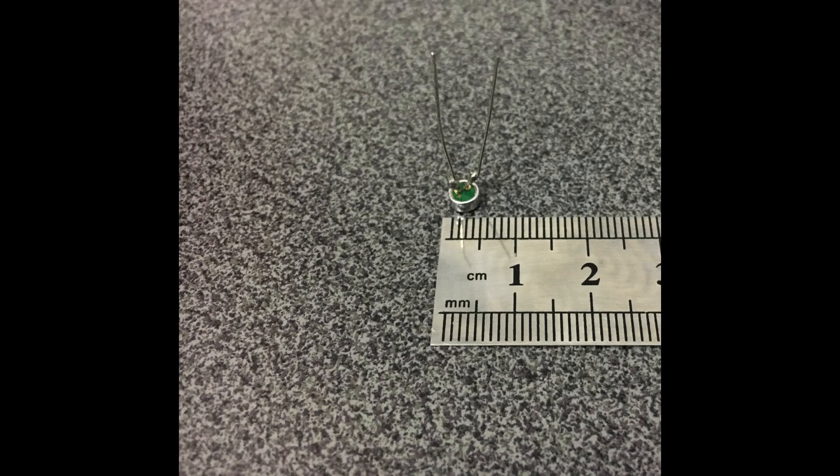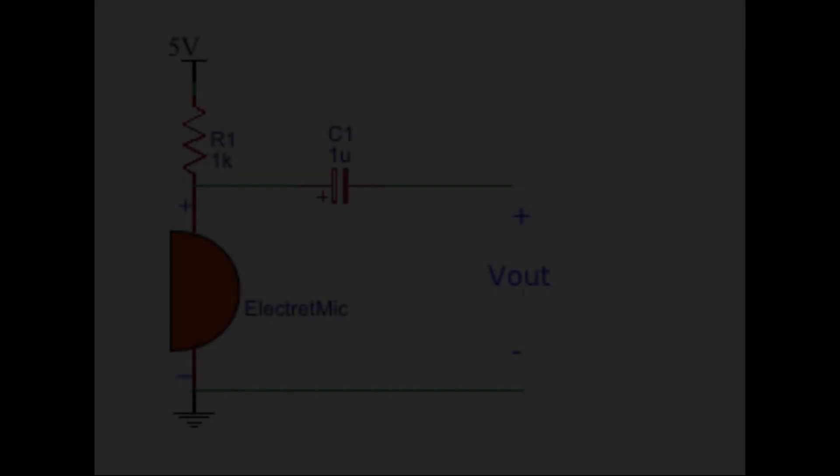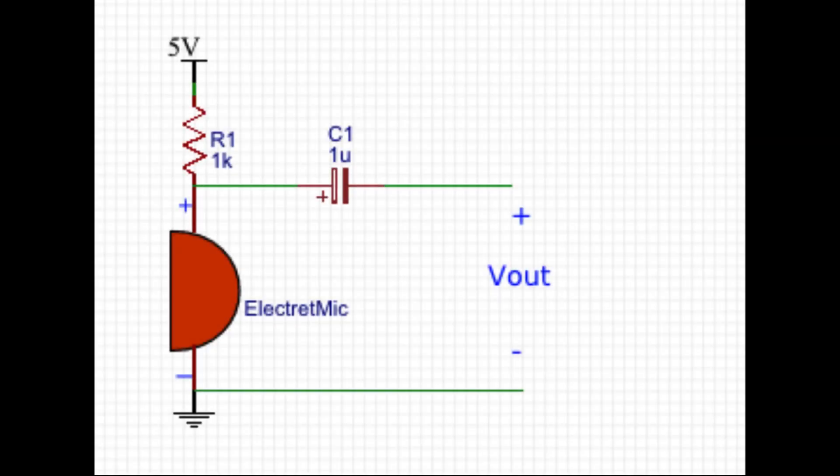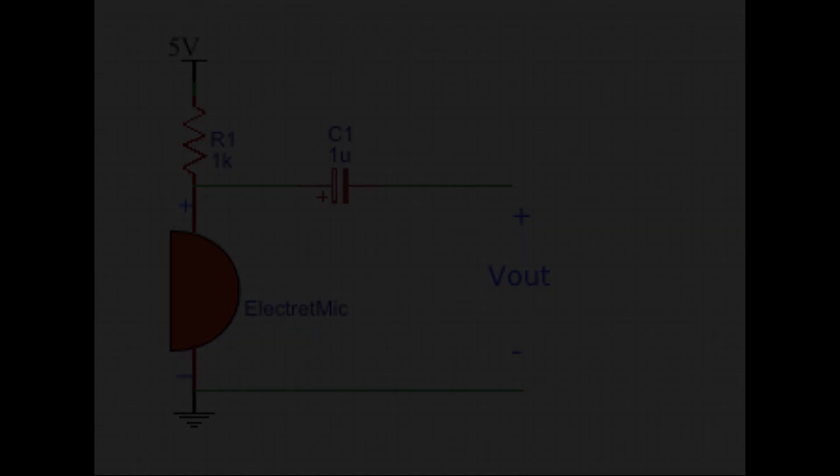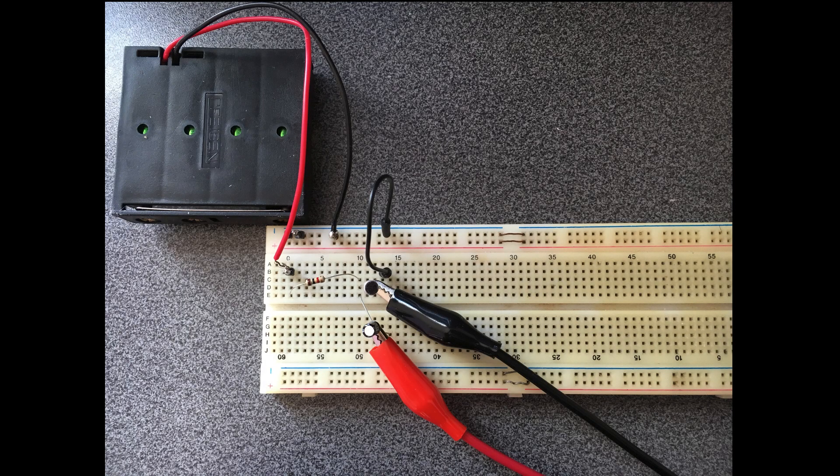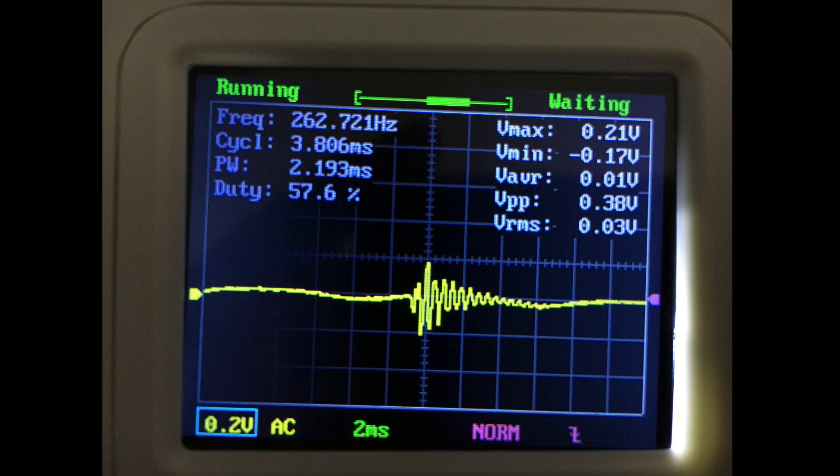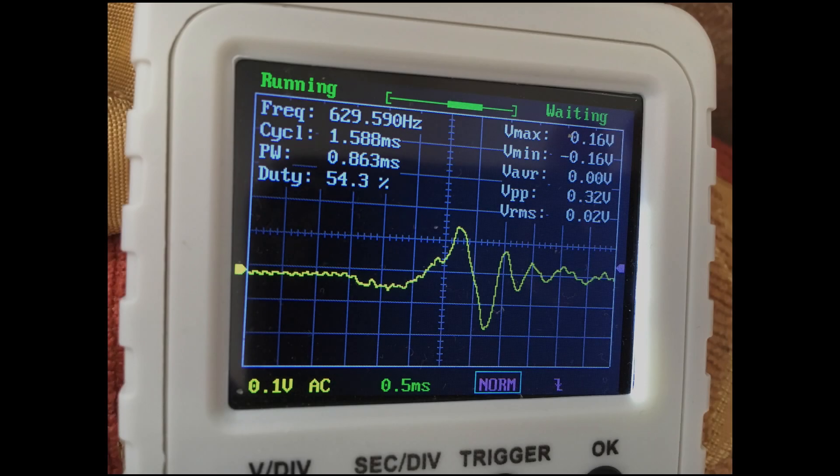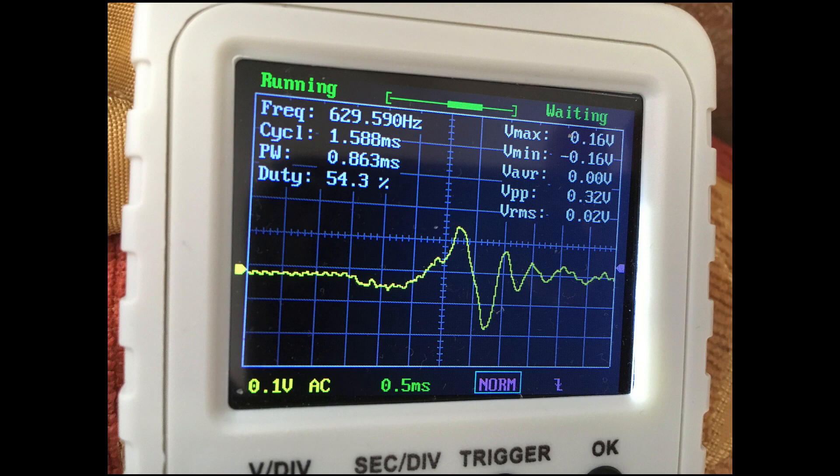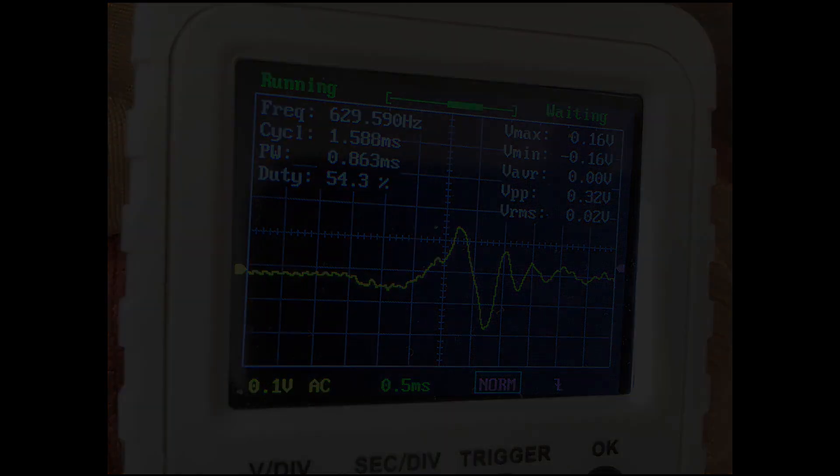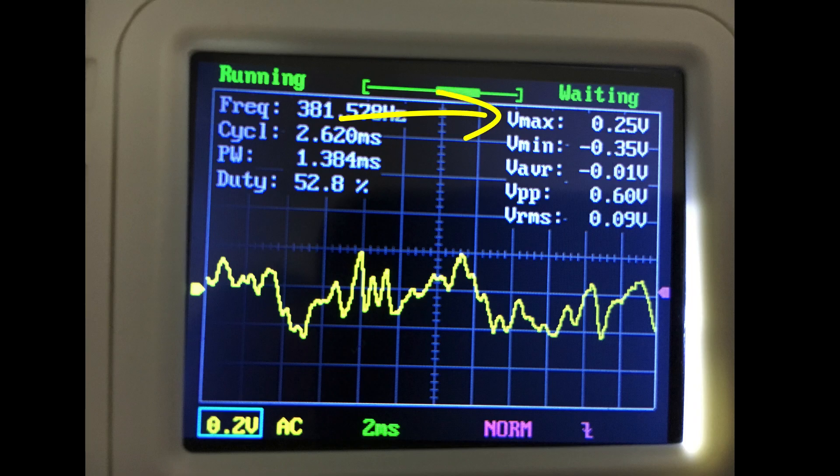To start with the experiment, I soldered two leads to the microphone pins, so I can connect it to my breadboard. After that, I used the setup recommended by the data sheet to test the output signal coming from the microphone, and here is what I got. As you can notice, the output voltage I got has a peak voltage of 0.25 volt at most, which is very low to use for speaker.